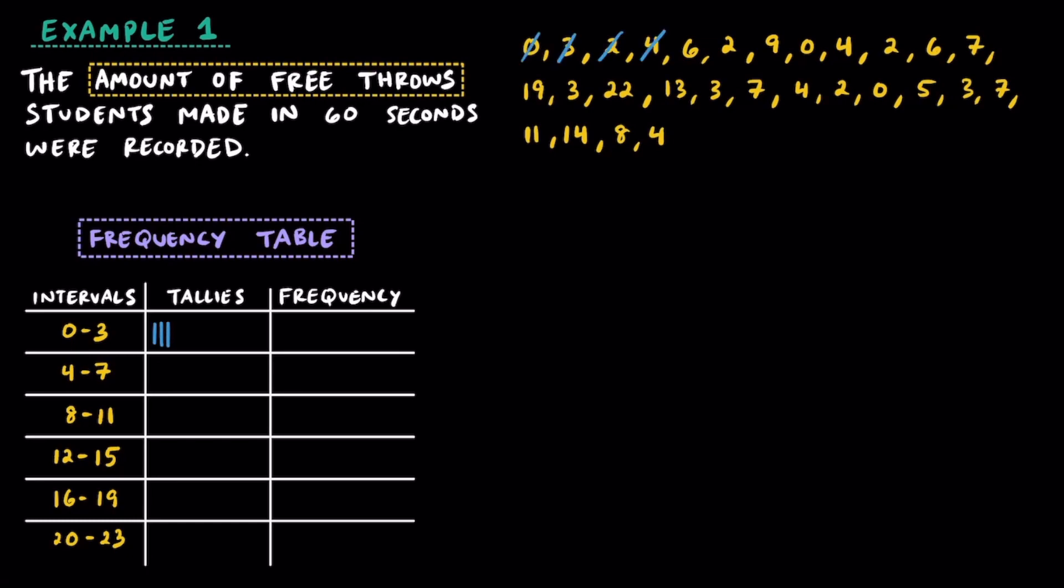Then we're going to go ahead and sort all of our data into each of these intervals by using tally marks. And after that, we're just going to count up all the tally marks to write the frequency for each of these intervals.